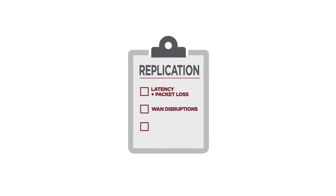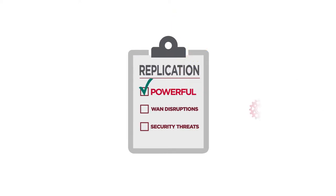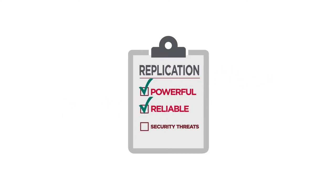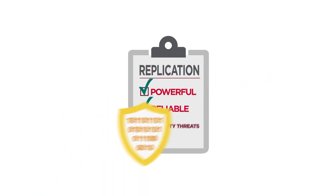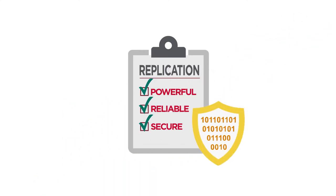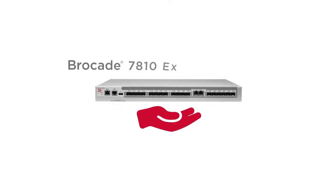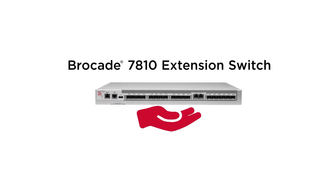But there is a cost-effective solution that is powerful enough to maximize throughput, reliable enough to protect against WAN disruptions, and secure enough to protect against threats without degrading performance. Meet the most affordable extension switch on the market, the Brocade 7810.